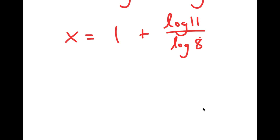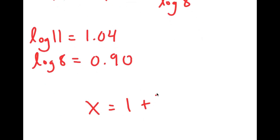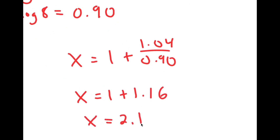Now I just plug in the actual values: log 11 is approximately 1.04 and log 8 is approximately 0.90. So x equals 1 plus 1.04 over 0.90, which equals 1 plus 1.16, meaning x is approximately equal to 2.16.